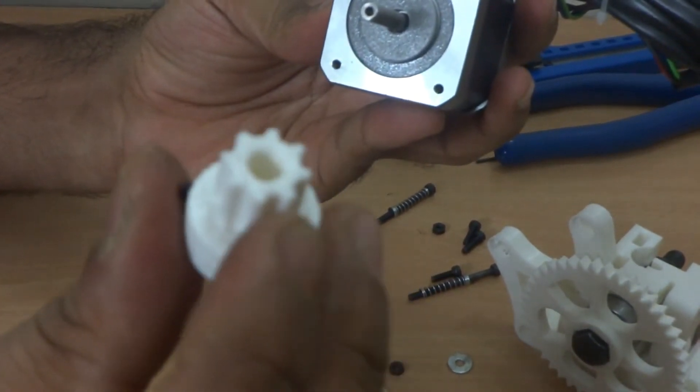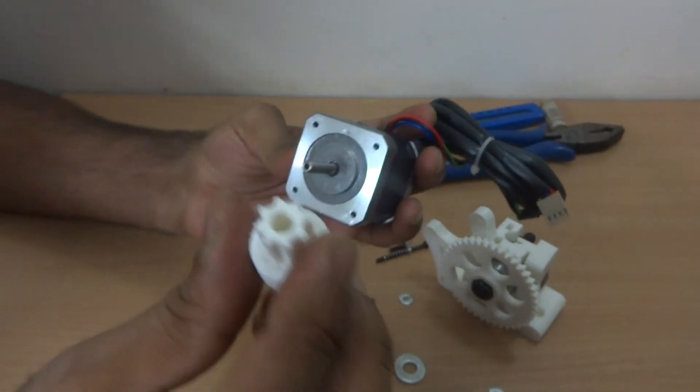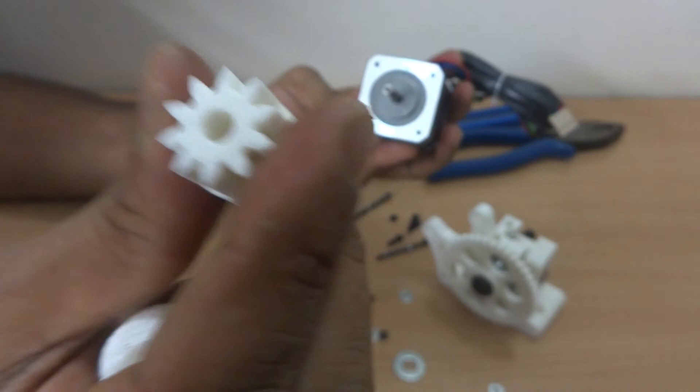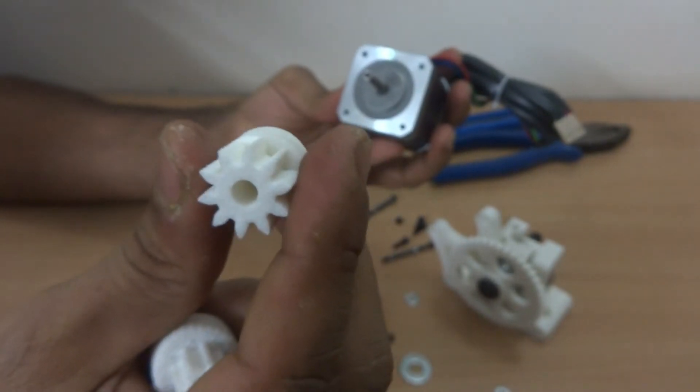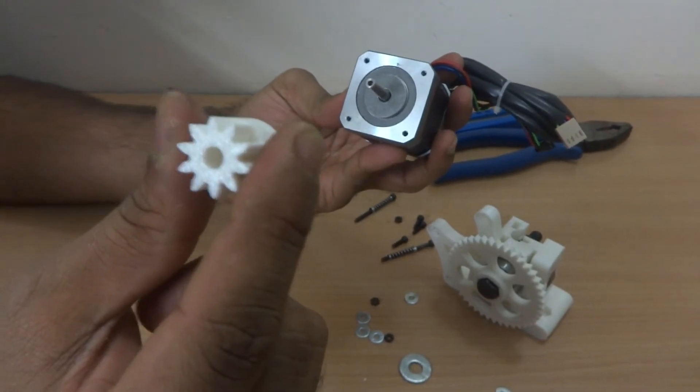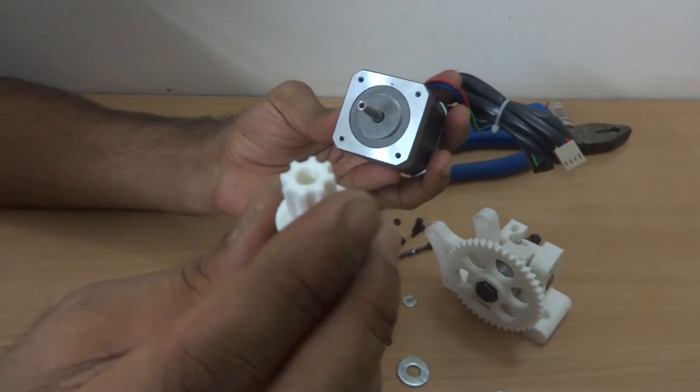Now the gear which you might receive in your kit might be different. However the installation procedure will be same. You might have a gear looking something like this, or maybe a different kind of gear. Similarly with the larger gear you might have a different looking gear. However it doesn't really matter.